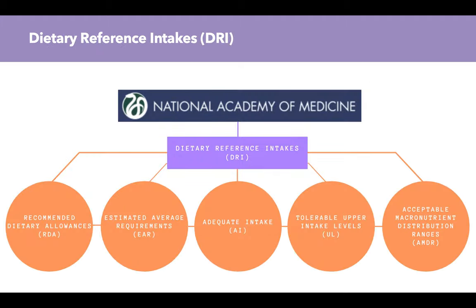DRI is an umbrella term. We have the National Academy of Medicine, and from that we derive the Dietary Reference Intakes, or DRI. DRI is composed of things like Recommended Dietary Allowances, or RDA; Estimated Average Requirements, EAR; Adequate Intake, AI; Tolerable Upper Intake Levels, UL; and the Acceptable Macronutrient Distribution Ranges, AMDR. We'll see what each of those mean.